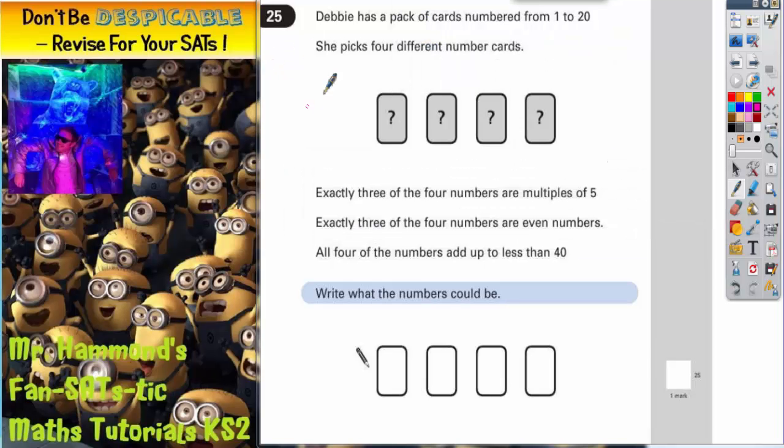Question 25. It is one of the last questions on the paper, so you'd expect a level 5 question. Debbie has a pack of cards numbered from 1 to 20. She picks 4 different number cards. Exactly 3 of the 4 numbers are multiples of 5. Exactly 3 of the 4 numbers are even. And all 4 of the numbers add up to less than 40. So we've got a series of clues and we've got to figure out what the numbers could be.